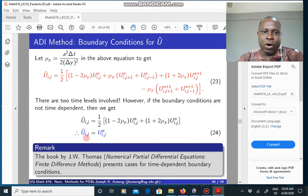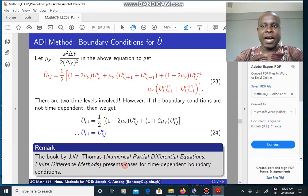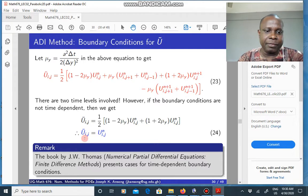In the more complex situation where the boundary conditions are time dependent, like the Neumann boundary condition or derivative boundary conditions, then you could take a look at a book by J.W. Thomas on numerical partial differential equations, the finite difference method. He presents cases where if you have time dependent boundary conditions, how you deal with that. But in the simple case where the boundary conditions are not time dependent, then you just use this to get the values of U tilde at the boundaries.